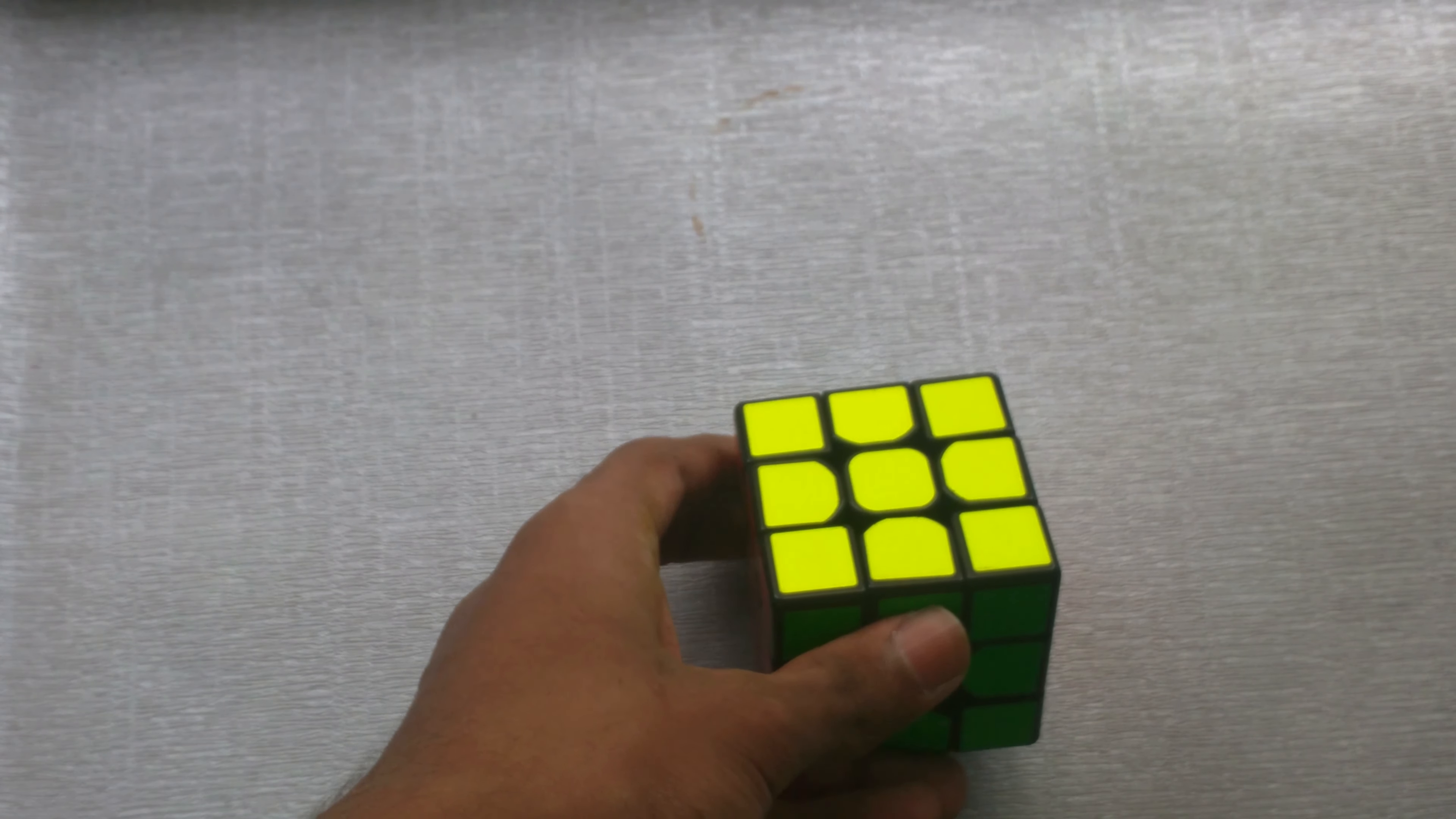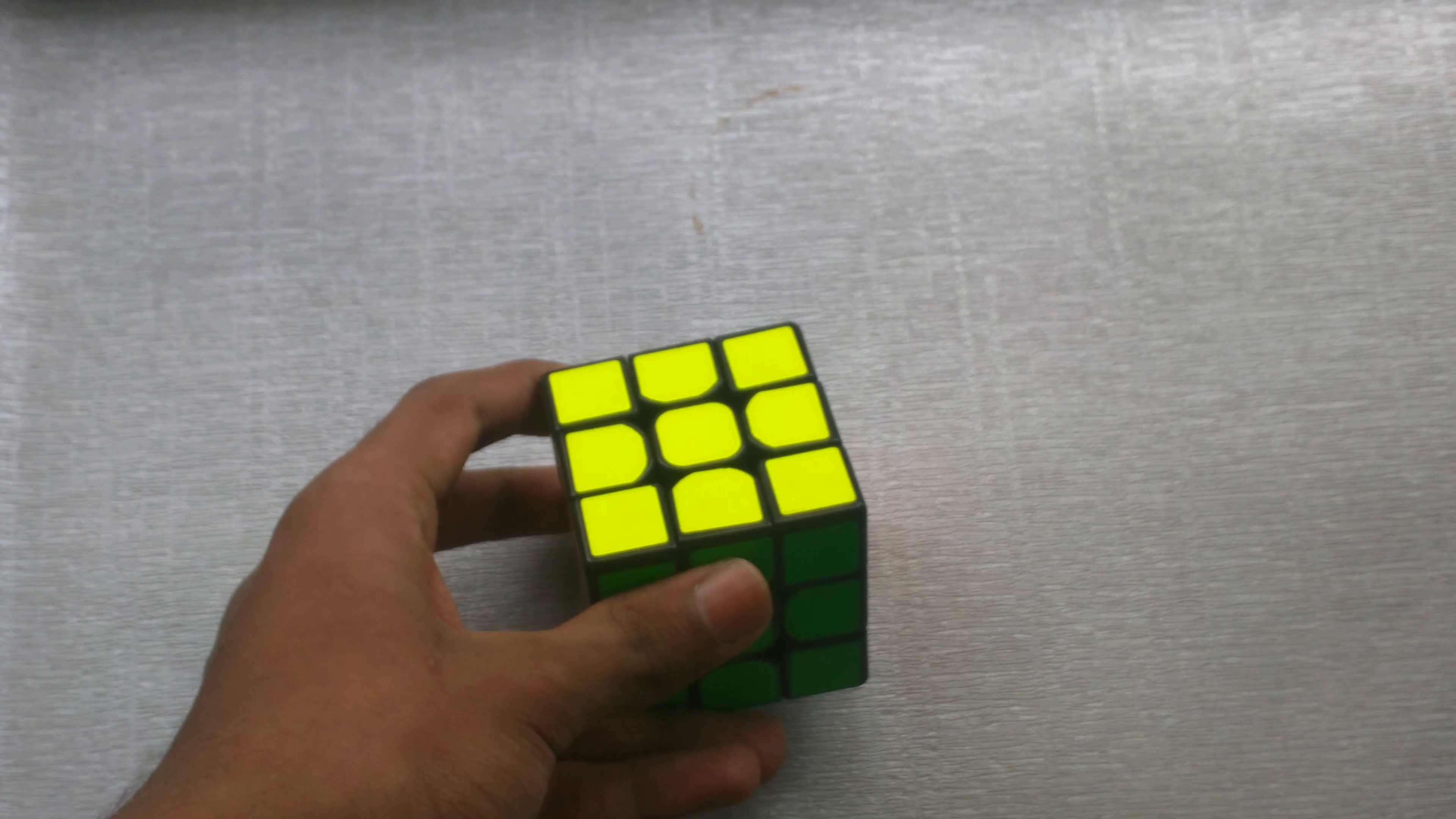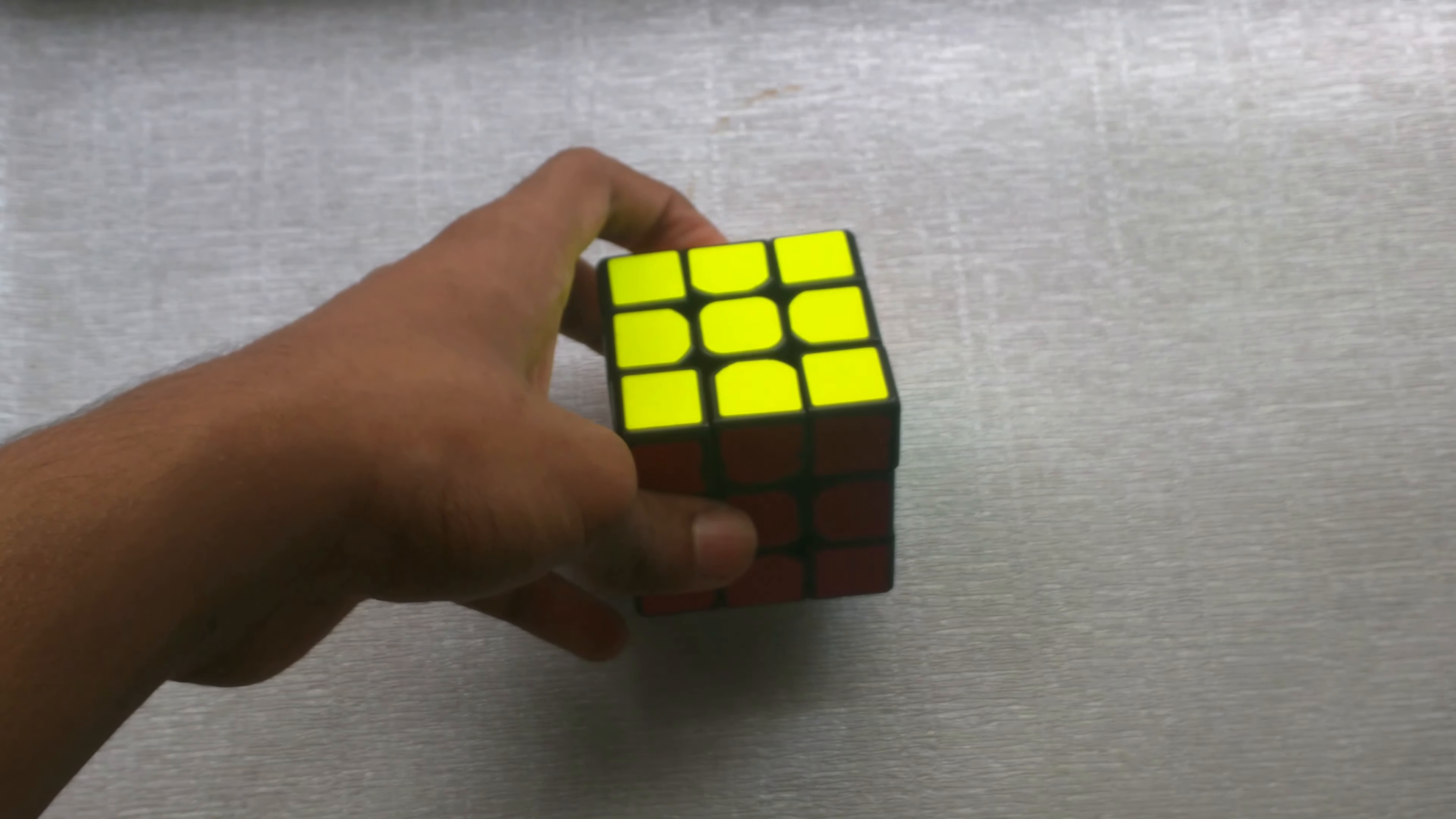So the CFOP method is an advanced method of solving the Rubik's cube which involves these four steps: the cross, the first two layers or F2L, OLL, and PLL.